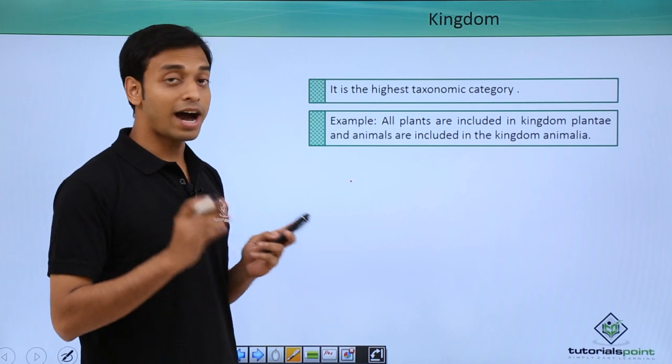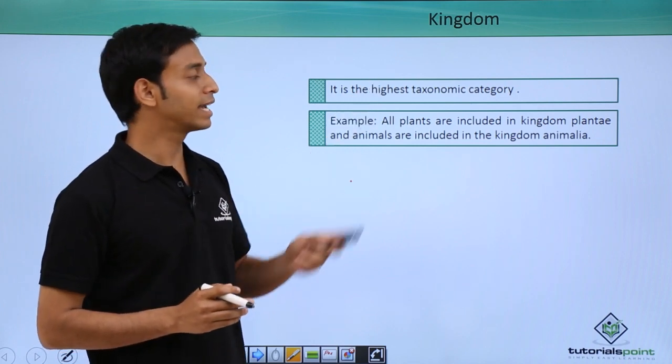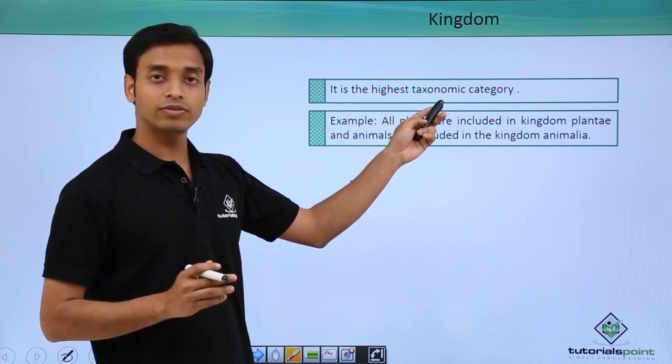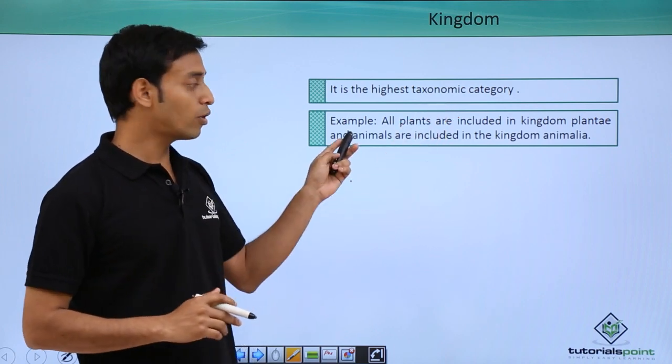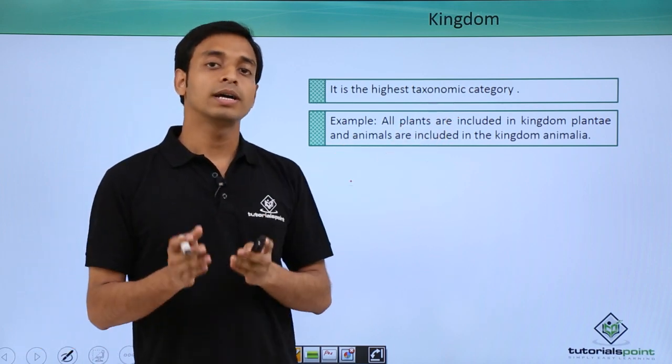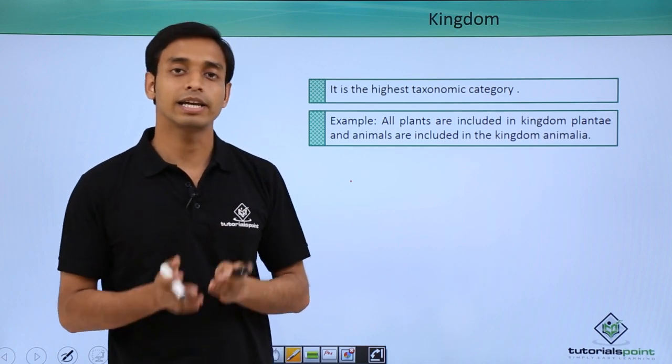The next or the highest category is known as the kingdom. It is the highest category of the taxonomic categories. For example, it mostly involves kingdom Plantae and kingdom Animalia. Kingdom Plantae includes all the plants, whereas kingdom Animalia includes all the animals.